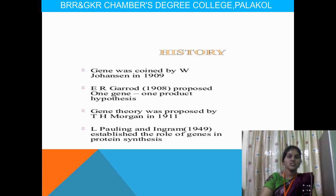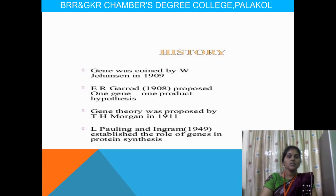First we have to know the history of the gene. It was first coined by Janssen in 1909. Garrett proposed the one gene one product theory or hypothesis — one gene can produce one product, or one amino acid produces one specific protein. The gene theory was proposed by T.H. Morgan in 1911. Pauling and Ingram said genes play a role in the production of protein synthesis.